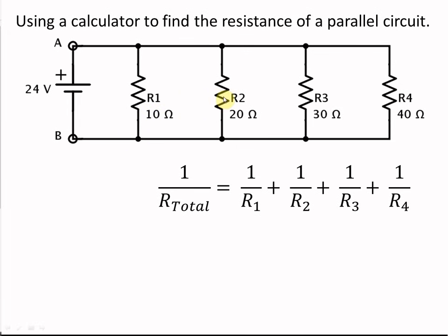We do have a resistance one of 10 ohms, resistance two of 20 ohms, resistance three of 30 ohms. You've seen the pattern here, right? And a resistance four of 40 ohms.